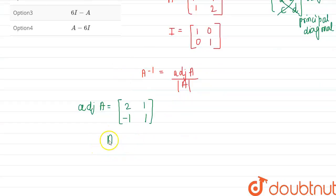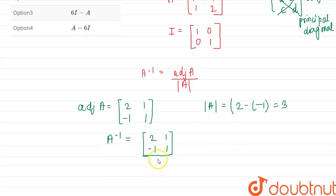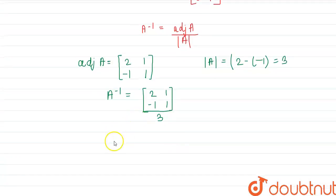Now we can find A inverse. So A inverse equals (2, 1; -1, 1) divided by the modulus of A. We can find the mod of A, that is 2 times 1 minus (-1), that will be 3. So this is divided by 3. So 3 times A inverse is equal to